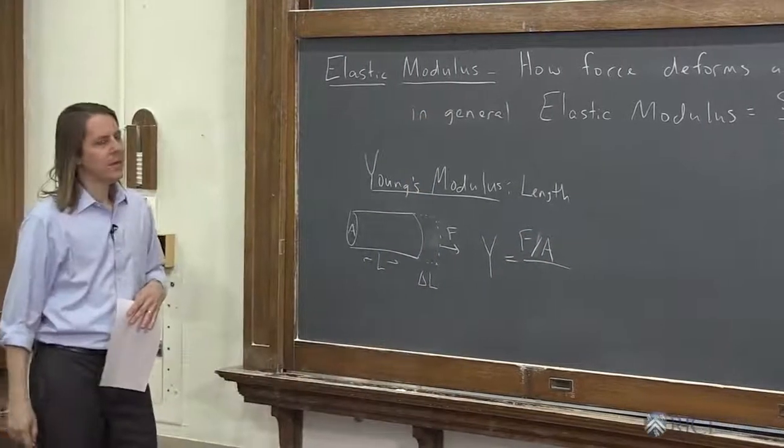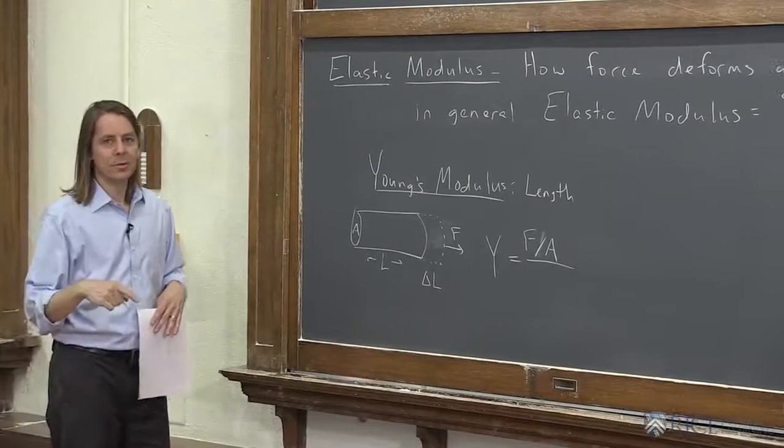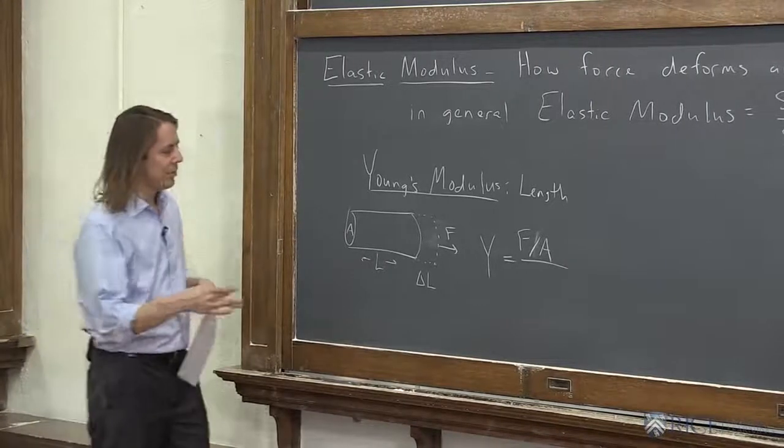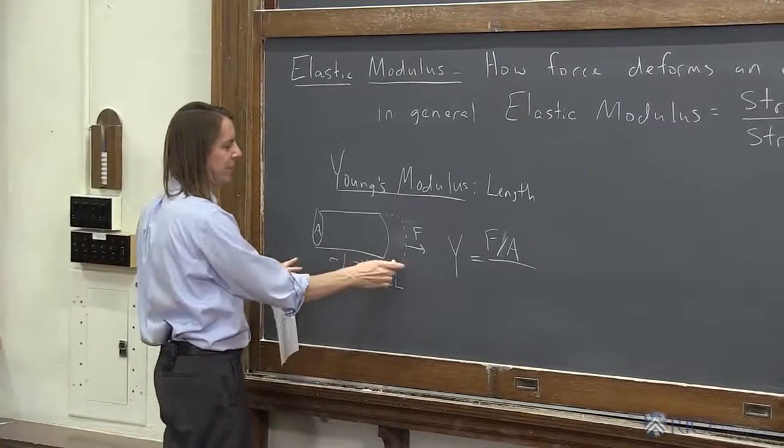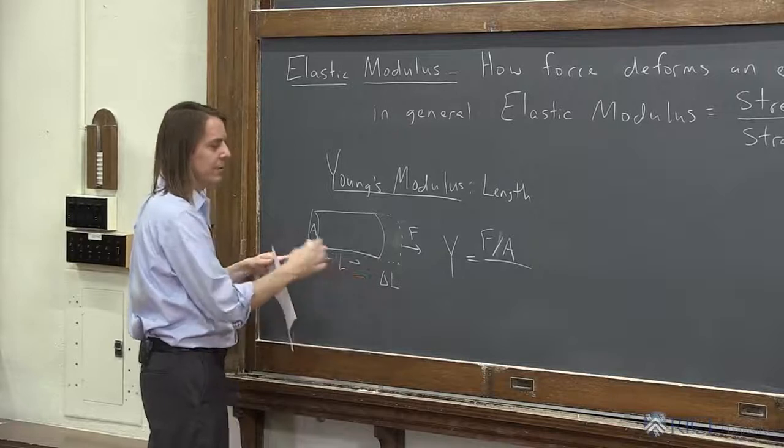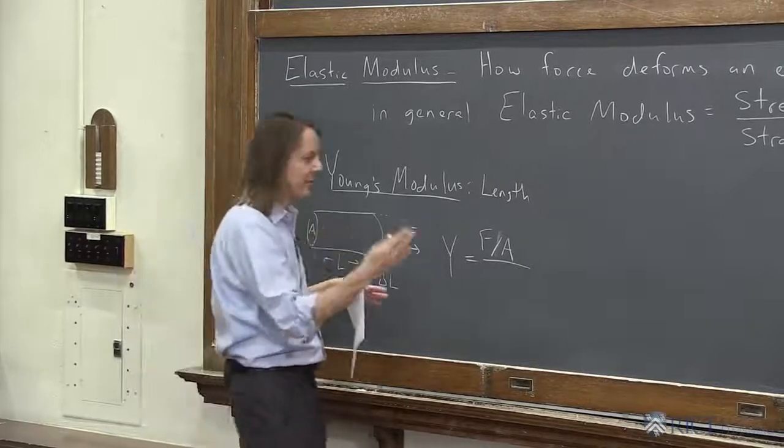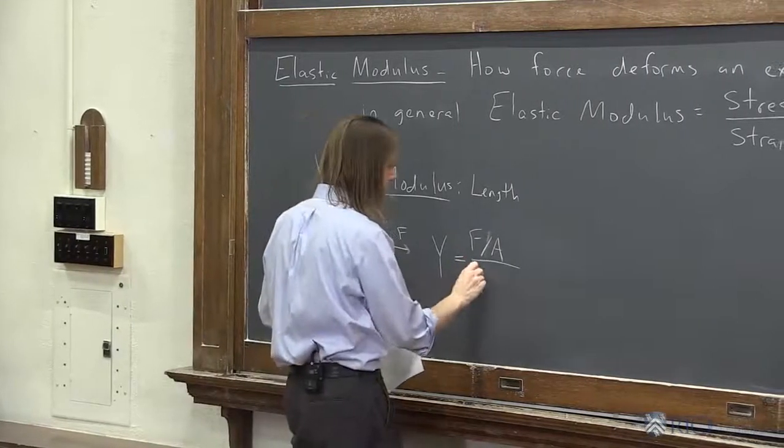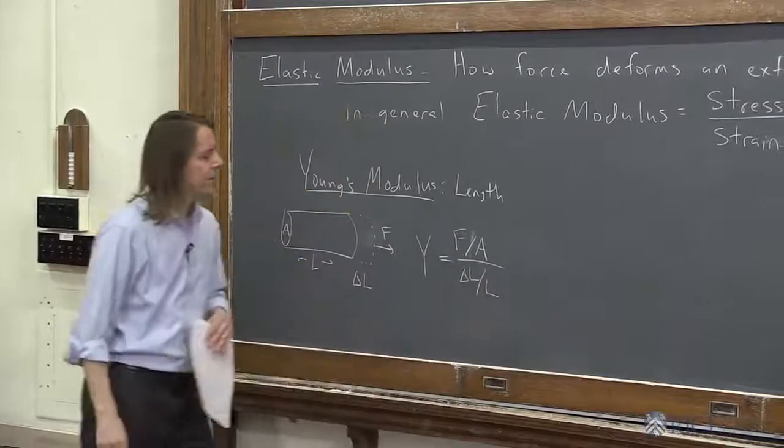And the strain is a unitless description of how deformed it is. So the clear way to make it unitless here is to take your delta L and divide it by L. It's like the fractional extension, or the percent it extended. So delta L over L, like that.